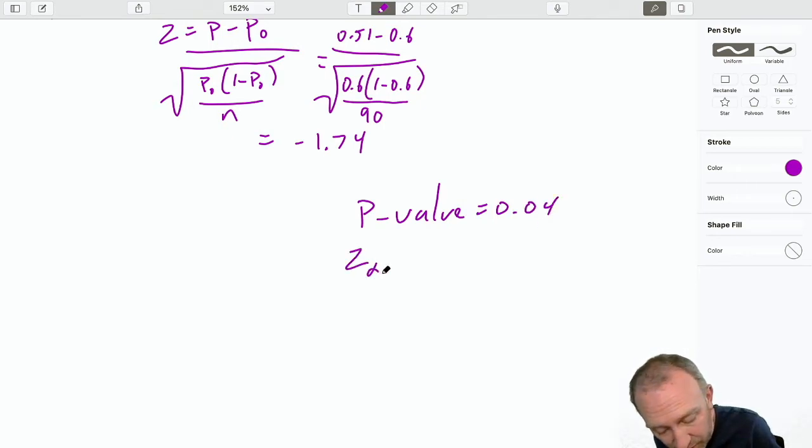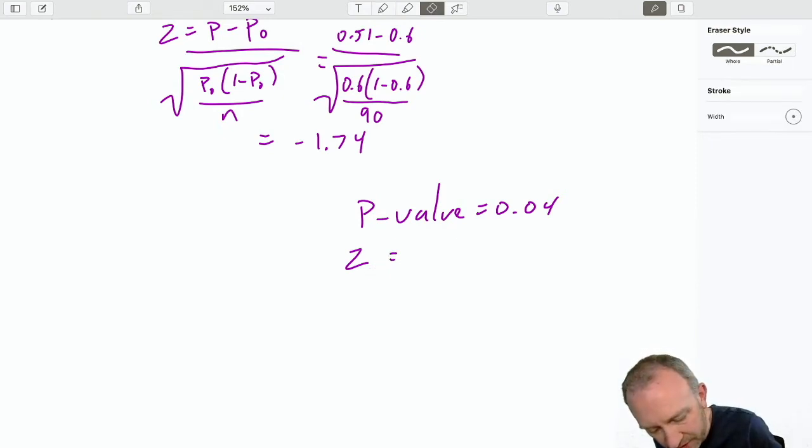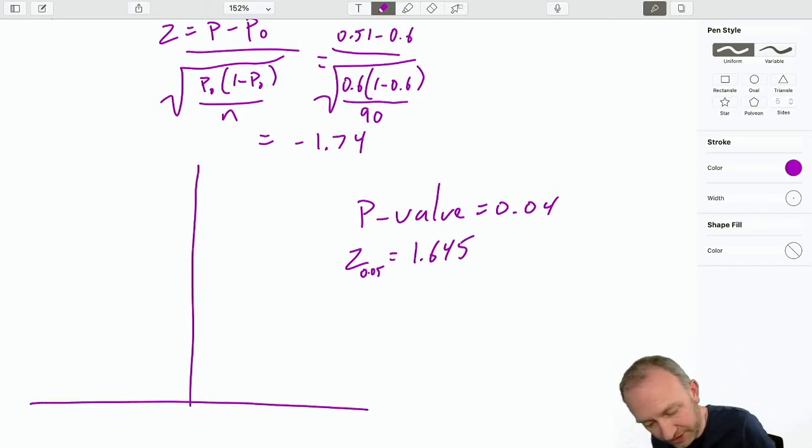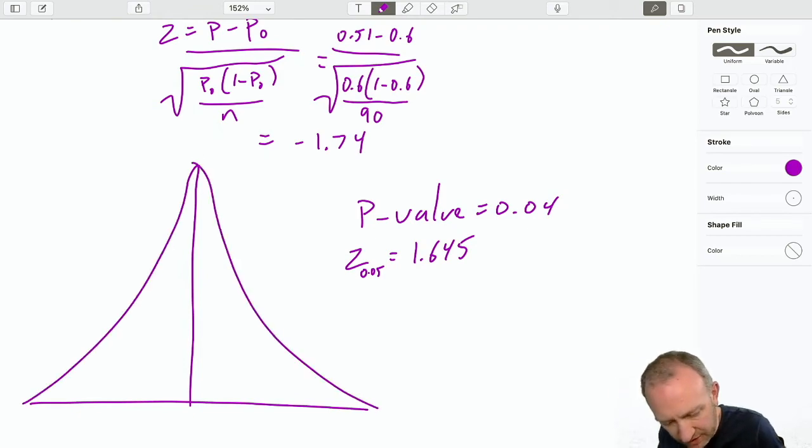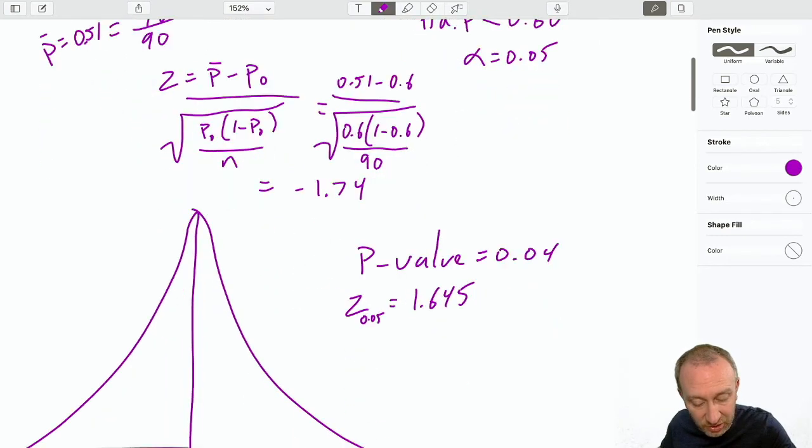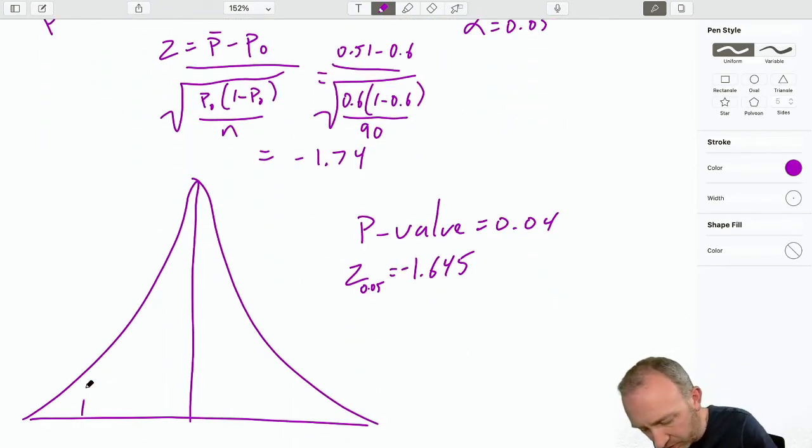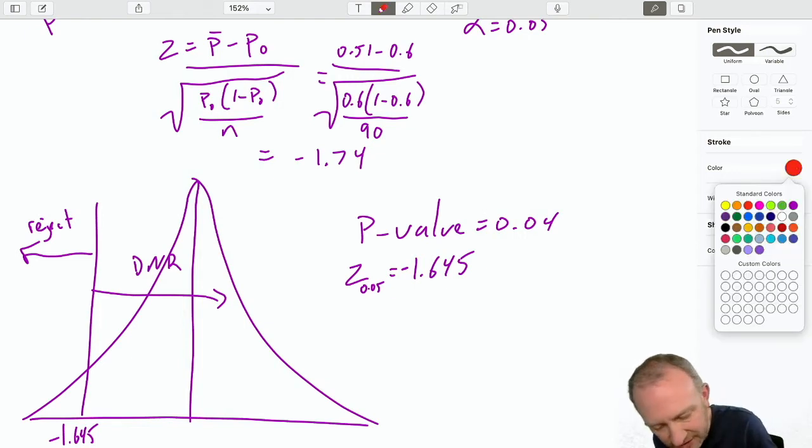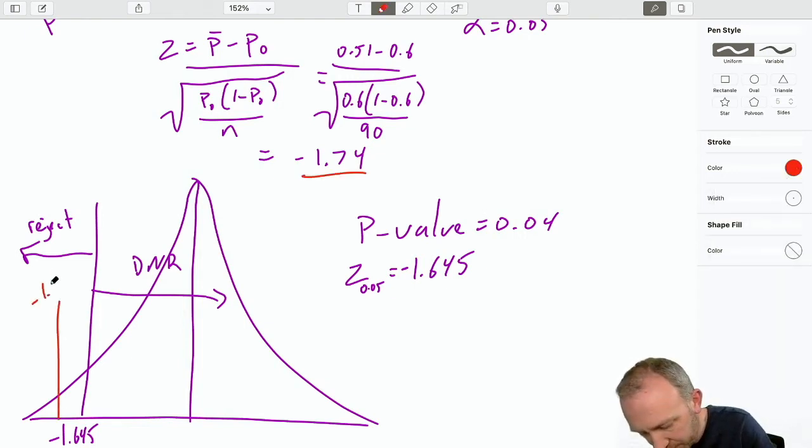Our critical value, if we wanted to use that critical value approach, well, I know alpha here is 0.05. And critical value for that one-tail test we've seen it before, 1.645. Once more, draw a picture when in doubt. Here I have my critical value. This is a lower-tail test, so this should be negative 1.645. And of course, we reject if we're below that. We do not reject if we're above. Here's my test statistic, negative 1.745. According to that critical value approach, we should reject.